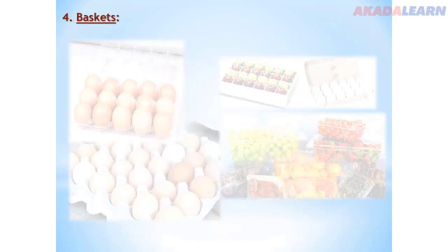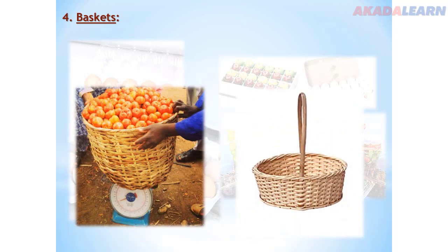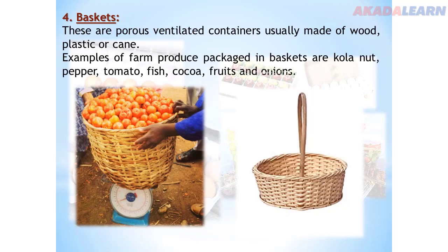Number four: baskets. Baskets are porous, ventilated containers usually made of wood, plastic or cane. Agricultural produce like kola nuts, pepper, tomato, fish, cocoa, fruits and onions can be packaged in baskets.